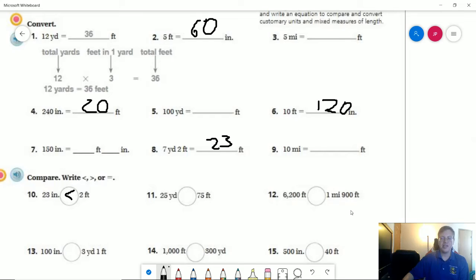If I do that plus 900, that would give me 6,180. So my left-hand side is going to be larger.